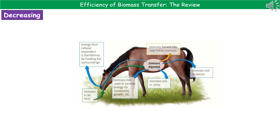If we consider what happens when one of our consumers eats our producer, once that biomass has been digested, some of it is lost as waste products — faeces and urine. Some of it is going to be lost as a result of providing energy for movement, for growth, and so forth. And some of it will be transferred via respiration as thermal energy to the surroundings.